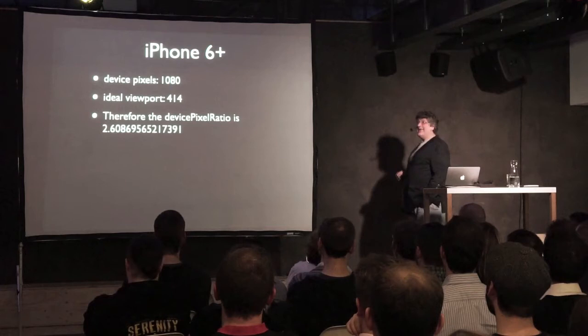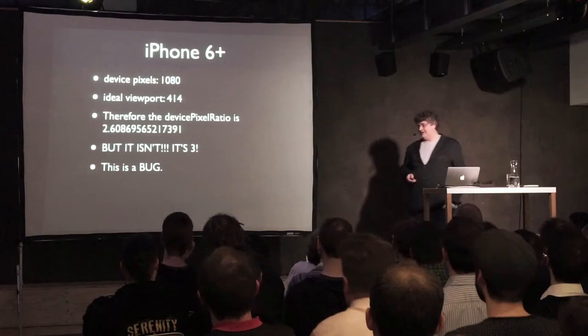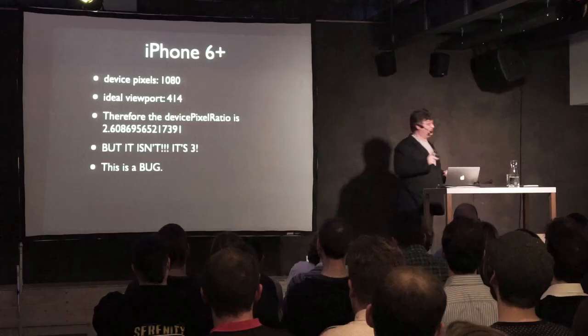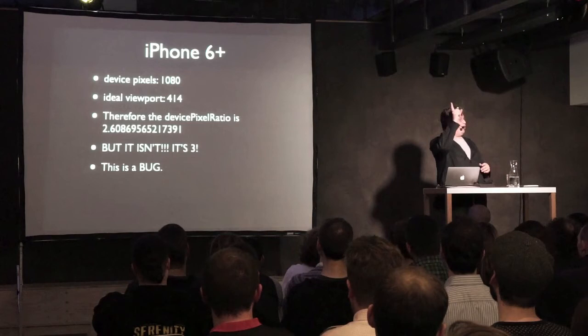The iPhone 6 Plus is, as far as I know, the only device that doesn't actually obey my theory of what device pixel ratio is — and if somebody touches my theories, I get mad. So I'm officially mad at Apple. This is a bug. Okay, we have reached the end of my presentation.